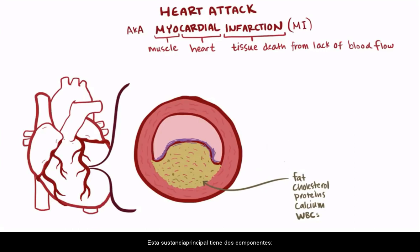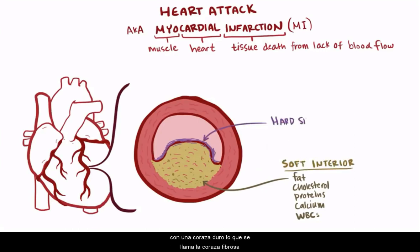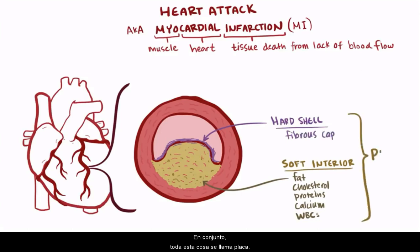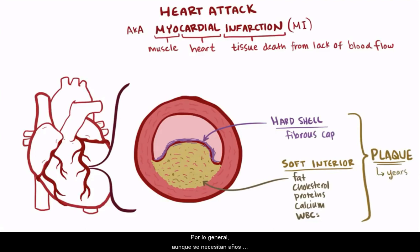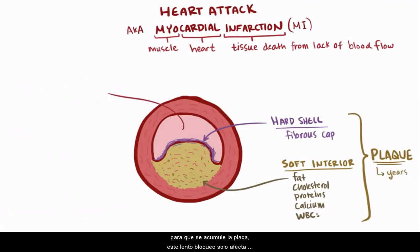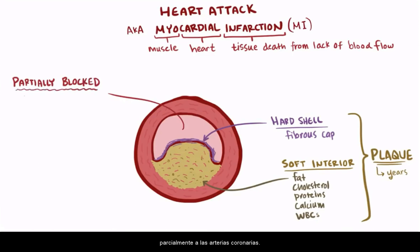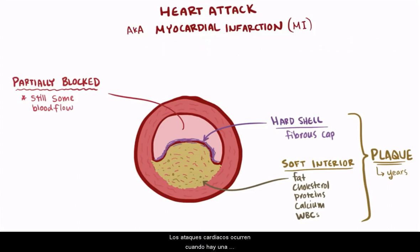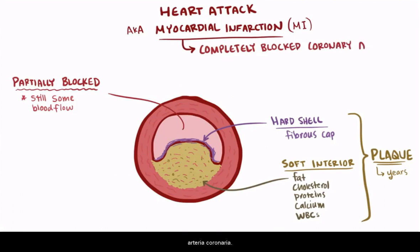This mound of stuff has two parts to it: the soft, cheesy textured interior, and the hard outer shell which is called the fibrous cap. Collectively, this whole thing is ominously called plaque. Usually though, it takes years for plaque to build up, and this slow blockage only partially blocks the coronary arteries, and so even though less blood makes it to the heart tissue, there's still blood.